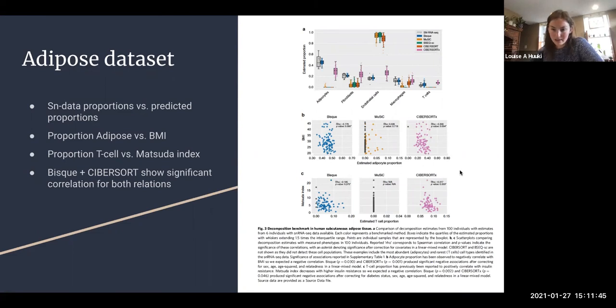We get results only from Bisque, Music, and CibersortX, and we get significant correlations from Bisque and CibersortX. They kind of say these methods behave—they had predictions that we expected. The second prediction they do is there should be a relation between T cells and the Matsuda index which has to do with insulin. I think here they expect negative correlations, and again Bisque and CibersortX are both able to pick out correlations that are expected.